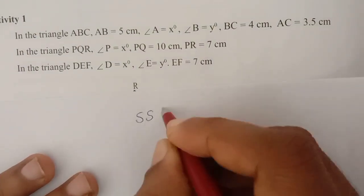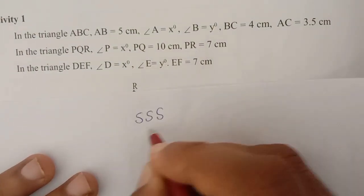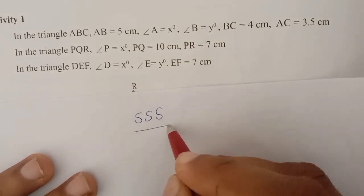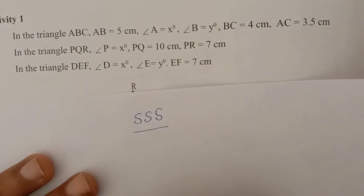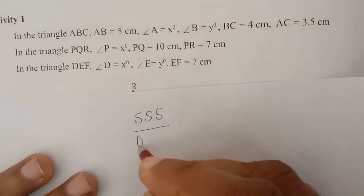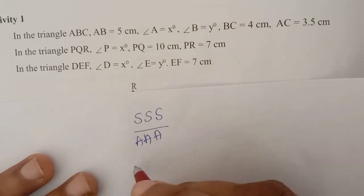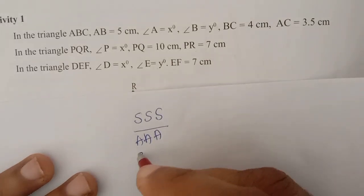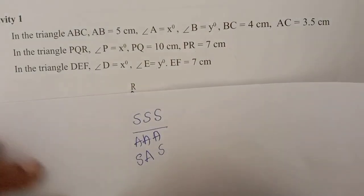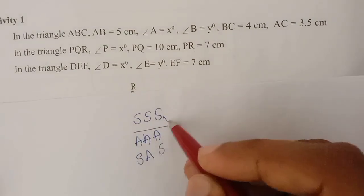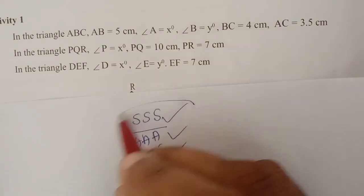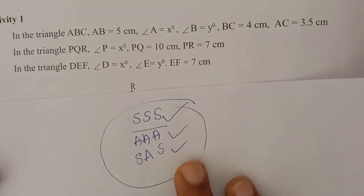We have 2 triangles and 3 angles. We have 2 angles and 3 triangles.